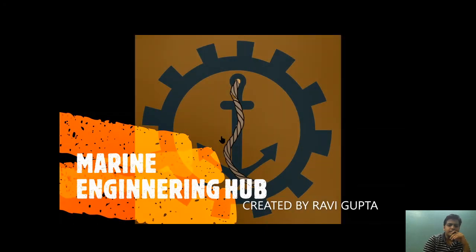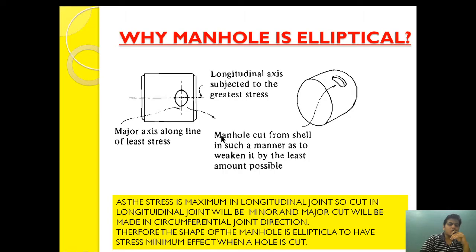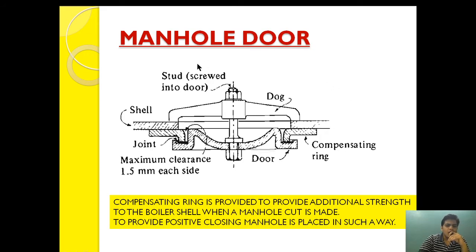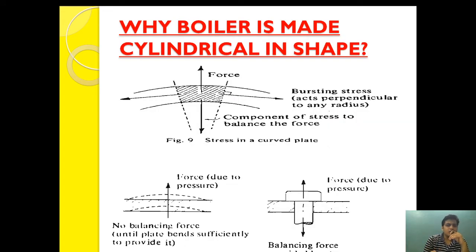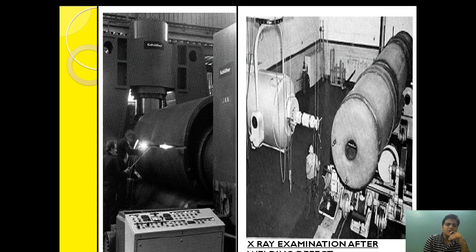Hello friends, welcome to Marine Engineering. This is Ravi Gupta. Today I'm going to talk about why the manhole door is cut elliptical in a boiler — why, in every pressurized cylindrical equipment, the manhole door cutting is elliptical. After that, we will see how the manhole door is cut and what equipment is provided. Then we will cover why the boiler is made cylindrical and not square or rectangular shape.